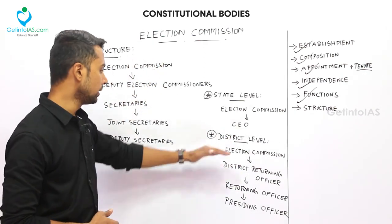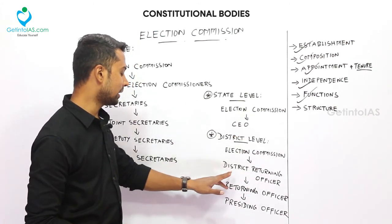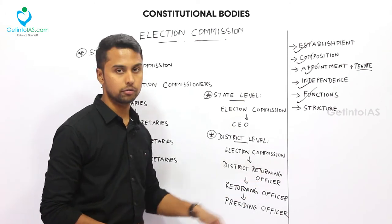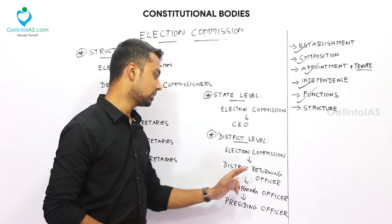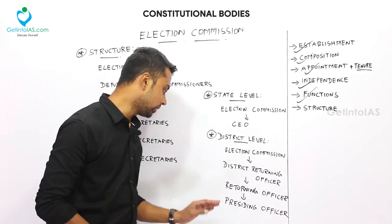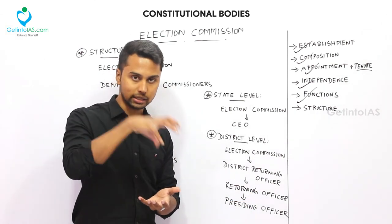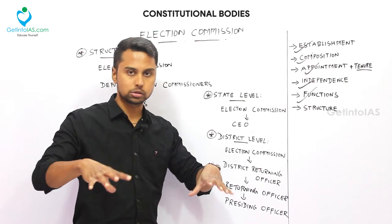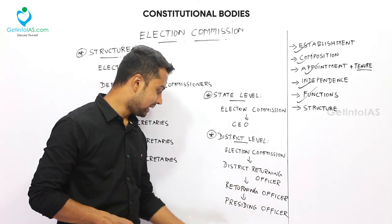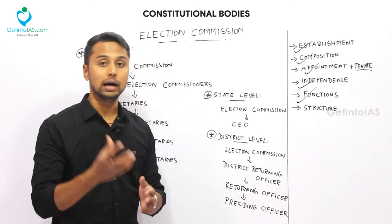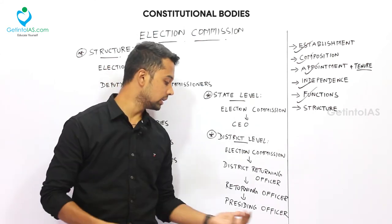At the district level, the hierarchy starts with the District Election Commission, under which there is a District Returning Officer — who is nothing but the District Collector. Under the District Returning Officer, there is a Returning Officer, who is in charge of constituencies. In a district there are multiple constituencies, and for each constituency there is one Returning Officer. Under the Returning Officer is the Presiding Officer, who is the head of each individual election booth.